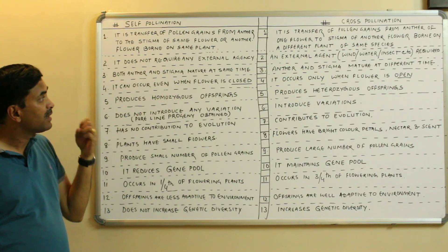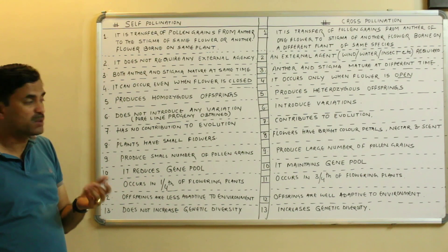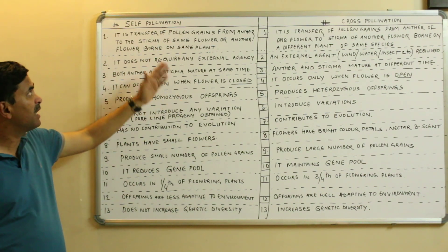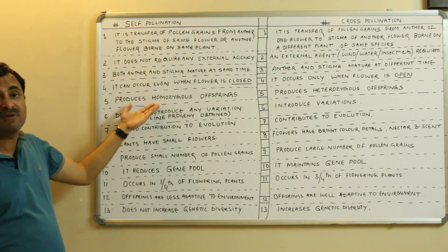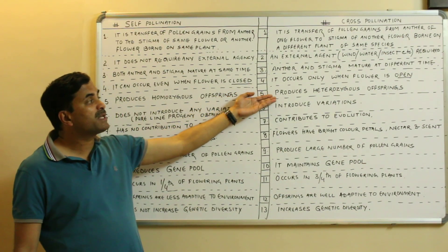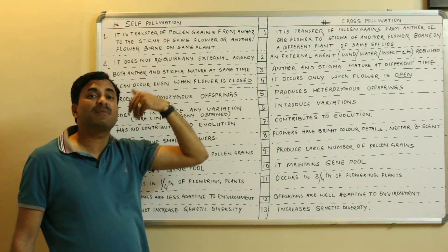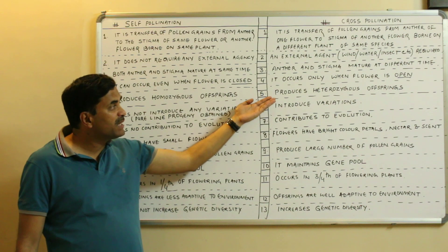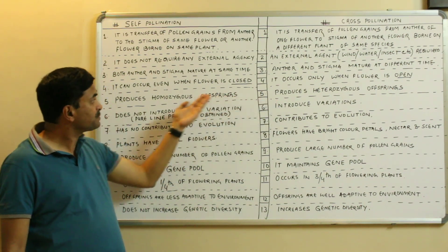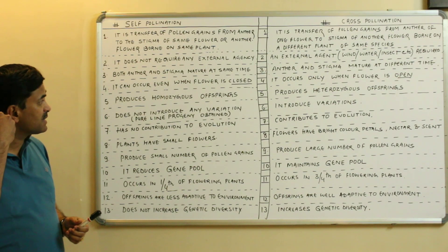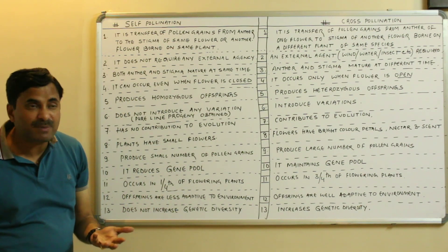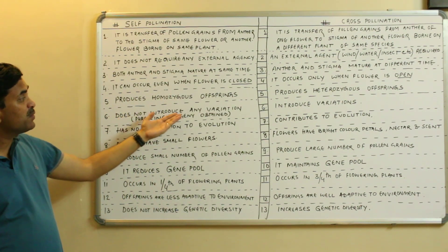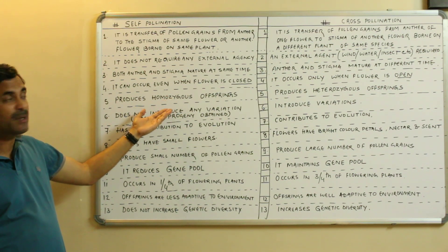Fifth point: self-pollination produces homozygous offspring. Since no variations are introduced, the offspring are similar to the parents — pure lines are produced. In contrast, cross-pollination produces heterozygous offspring, because pollen grains come from a different flower. So self-pollination produces homozygosity while cross-pollination produces heterozygosity among the offspring.